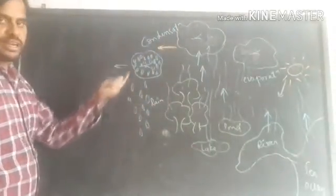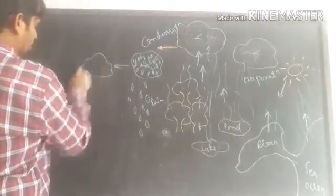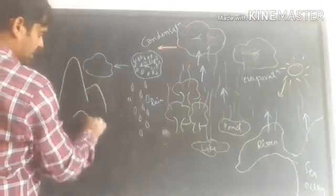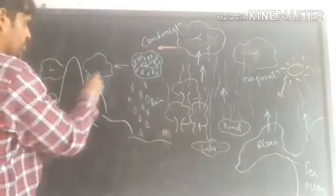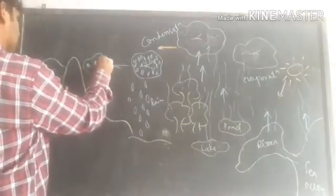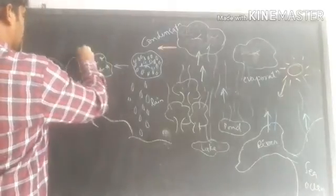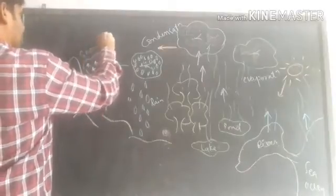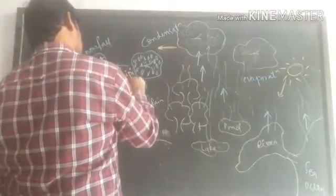If the cloud becomes more and more cool, at the hill or mountain region the environment is very cool. Then, due to more cooling of the water molecules, it becomes ice, meaning snow, and it gives snowfall. Snowfall is formed by precipitation.